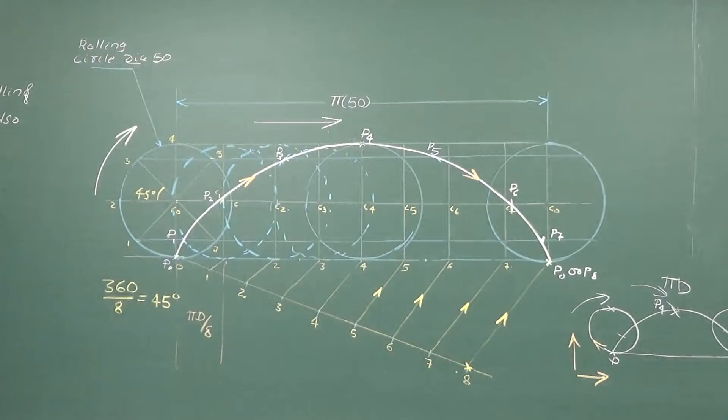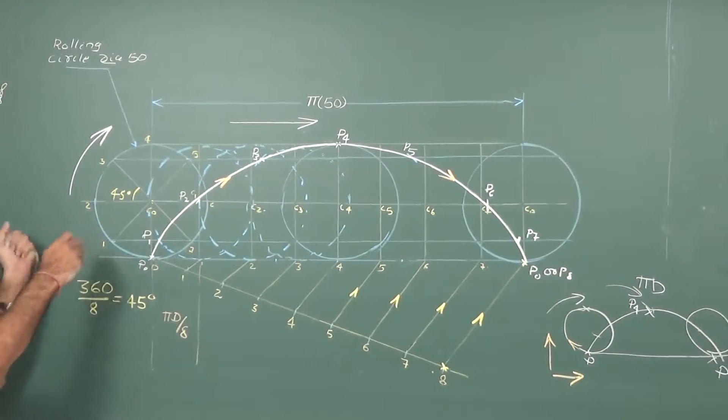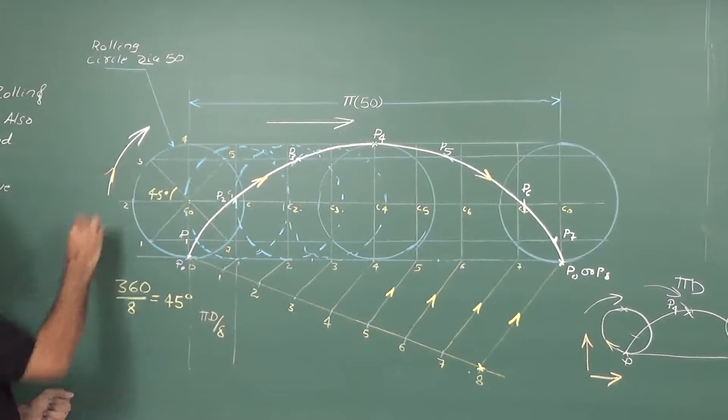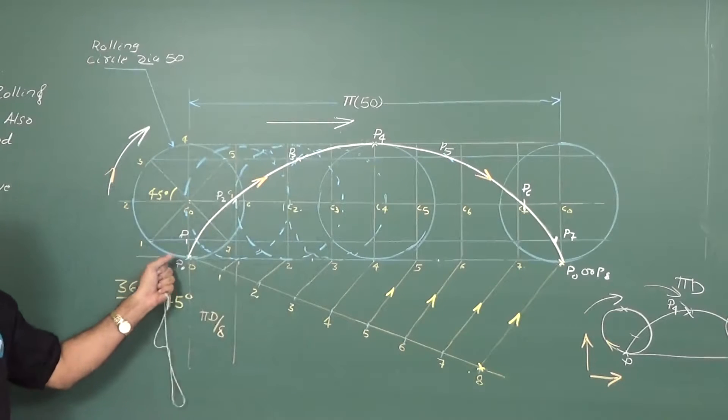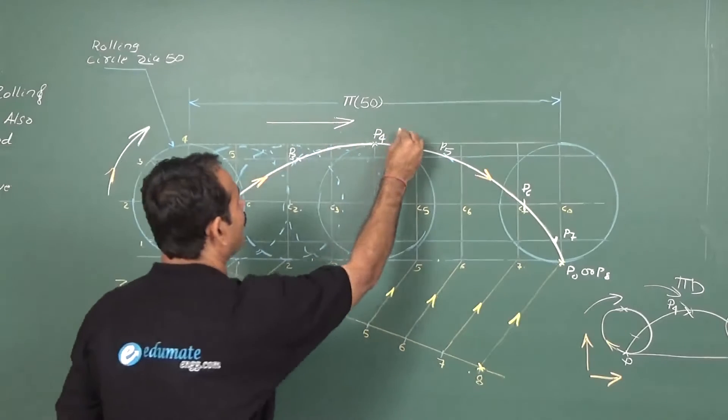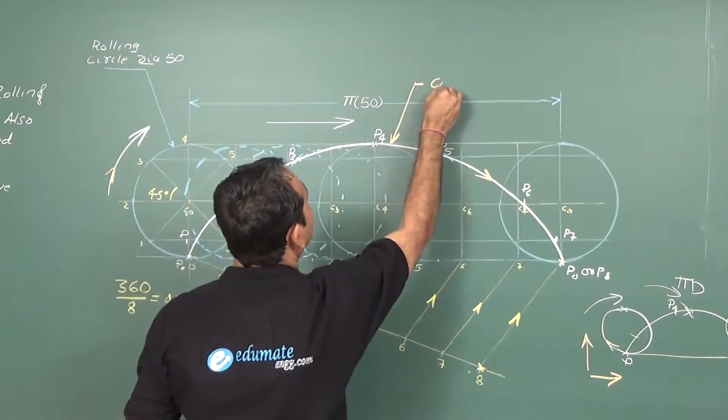This entire path what I have drawn can be called as cycloid. By definition, it matches our definition. It is the locus of a point on the periphery or the circumference of a circle. As the circle is moving forward, there is one motion rolling motion. Other one is forward motion. Both the motions are put together to get this path. And the name of the curve obviously is cycloid.